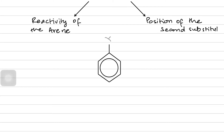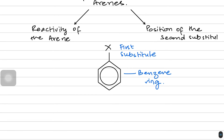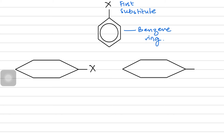Let's begin. You have this benzene compound where X represents any substituent. It is the first substituent attached on the benzene through any kind of reaction — obviously electrophilic — and the benzene ring is over here. Now there can be two important changes.